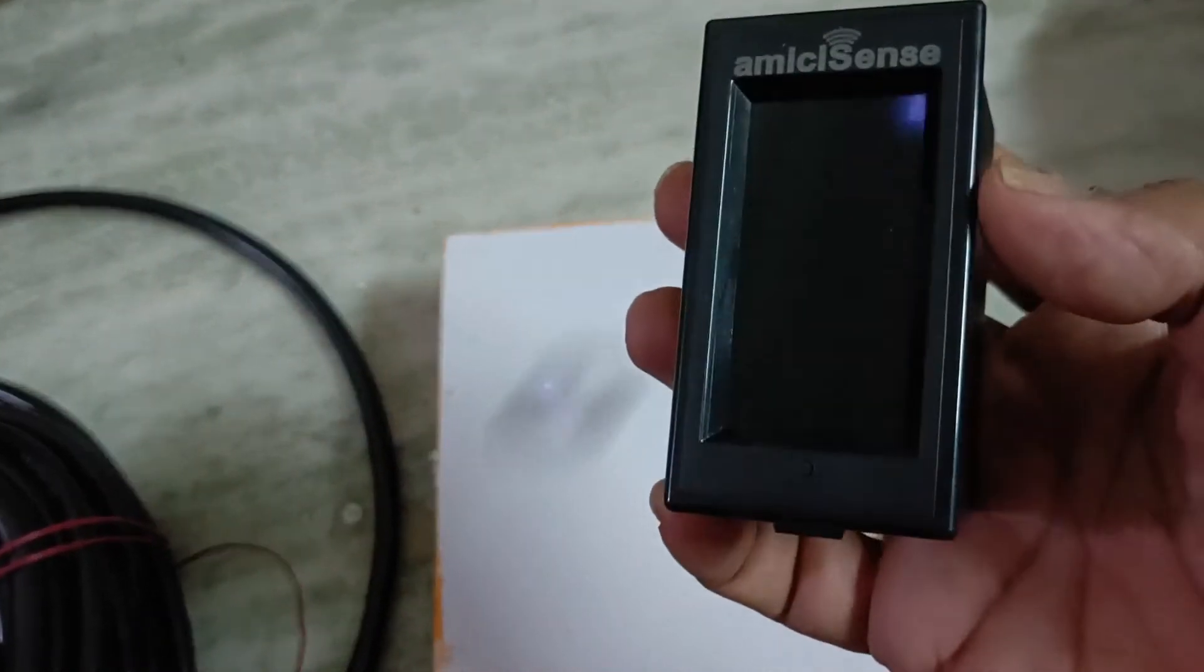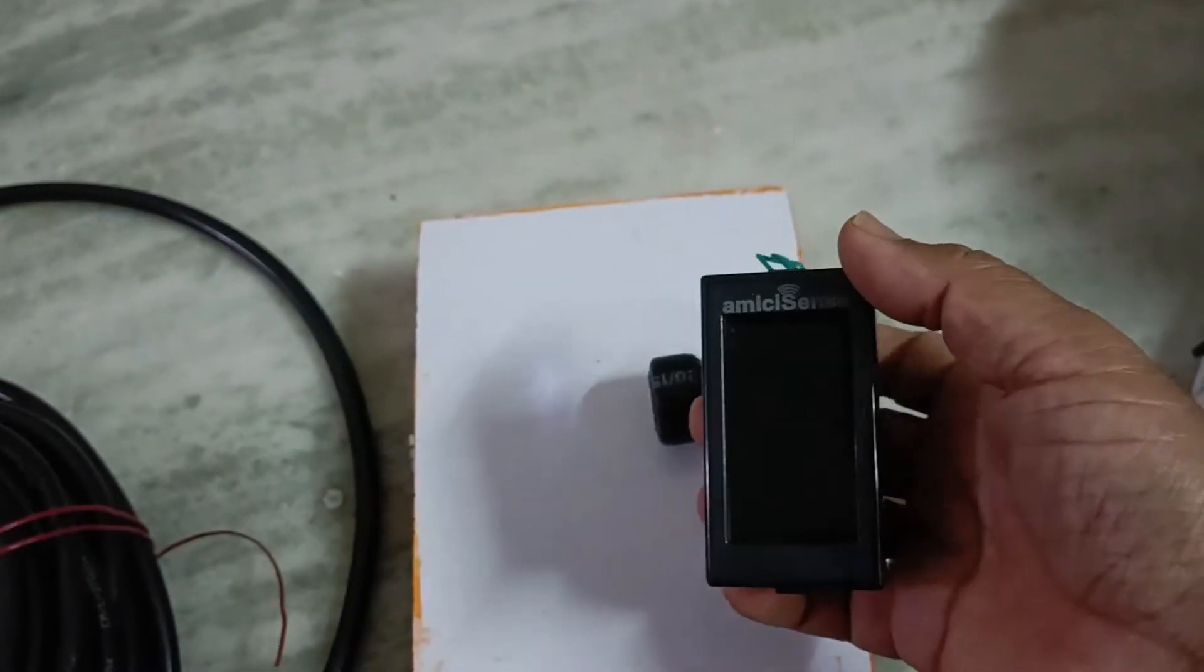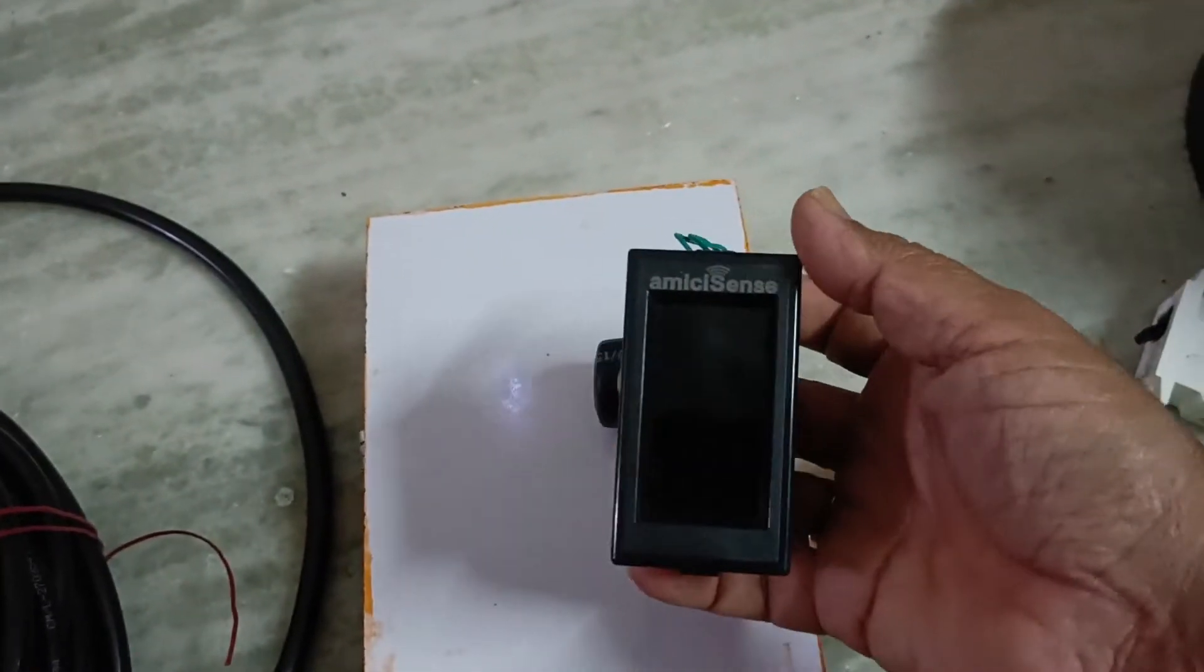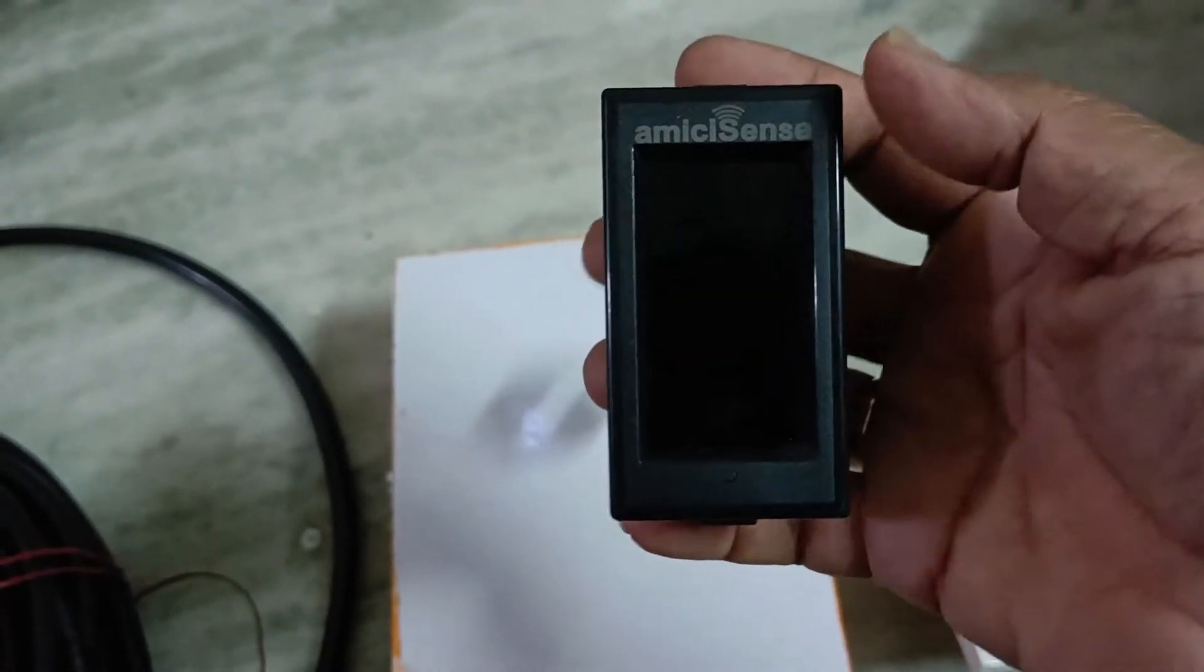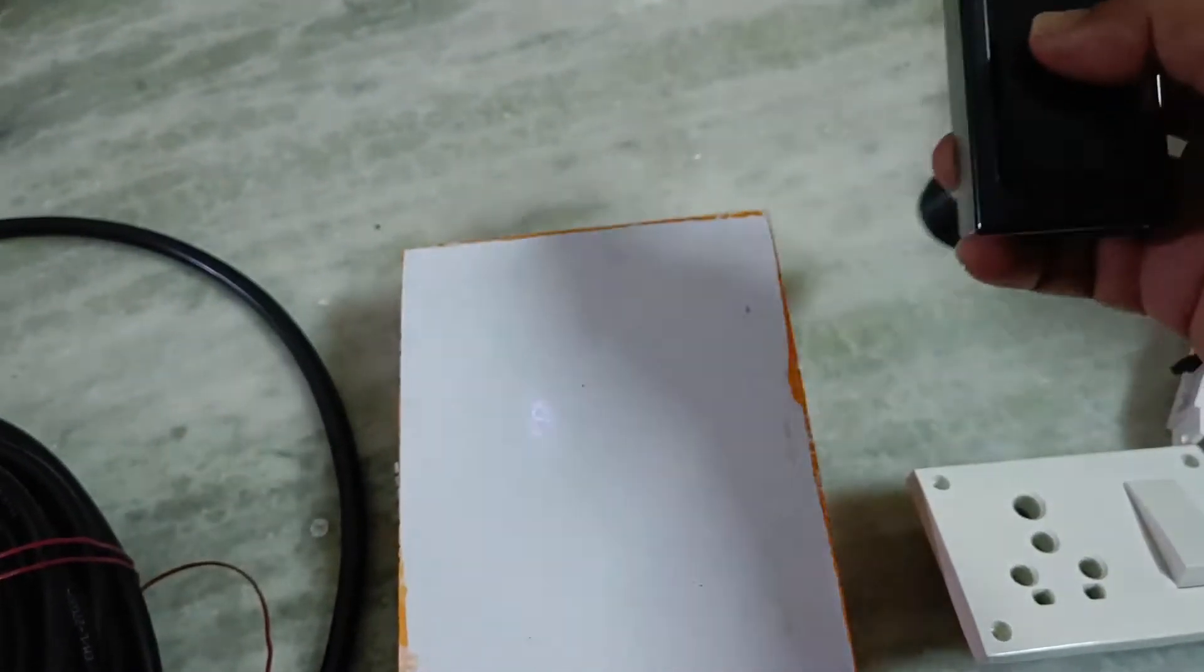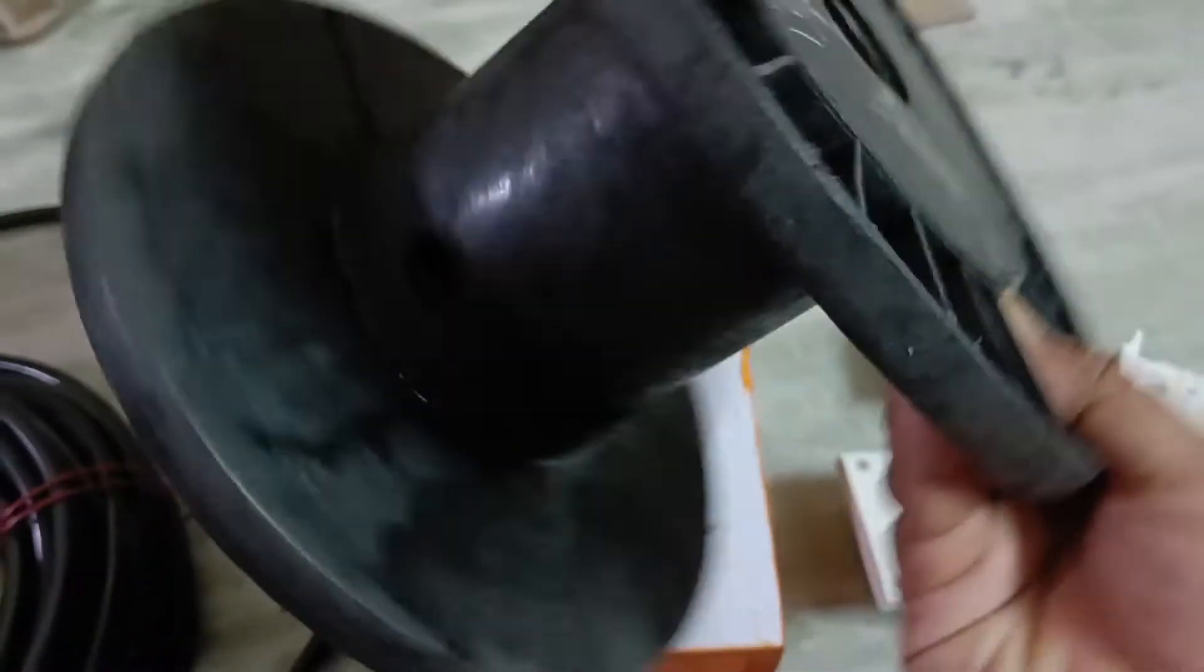To measure the units that you have consumed or the units that your vehicle has taken in, buy one power meter. I am buying this Amisense one. To keep the wire in a reel, you will get such reels for around 100 rupees also.